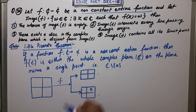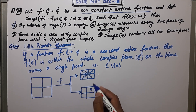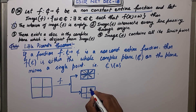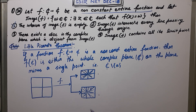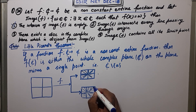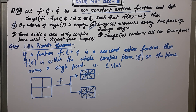Option 2 says image f intersects every line passing through the origin. Since image f is either the whole complex plane or the plane minus one point, if you draw any line through the origin, it will intersect image f. Even if a line passes through the eliminated point, it still intersects the rest of the plane — there is at least one point of intersection. So Option 2 is correct.